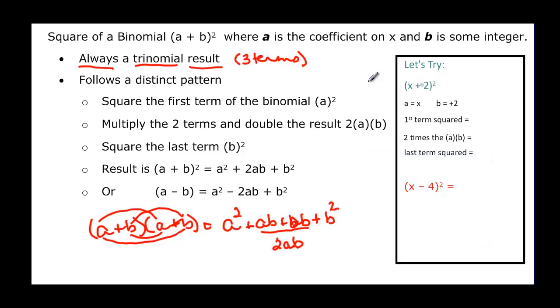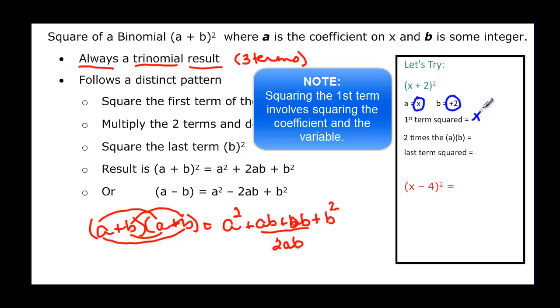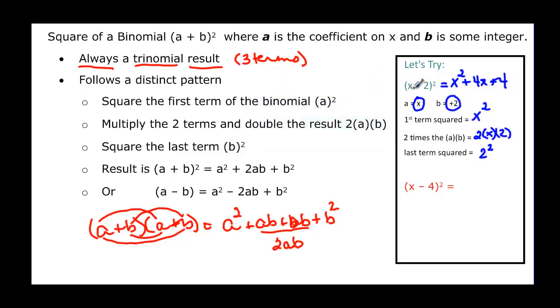So let's try. Here I have x plus 2 quantity squared. And I know that my a is going to be x and that my b is going to be positive 2. So the pattern said square the first term. So my first term is x and I'm going to square it. So so far I know that I have x squared. And then it says take 2 times your a and times your b. So I have 2 times my a, which is x, times my b, which is 2. And 2 times 2 would be 4 times x. So I know I have plus 4x. And then take my b term, the last one. And that's going to be 2. And it says square that one. So 2 squared will be 4. So x plus 2 quantity squared is really x squared plus 4x plus 4.